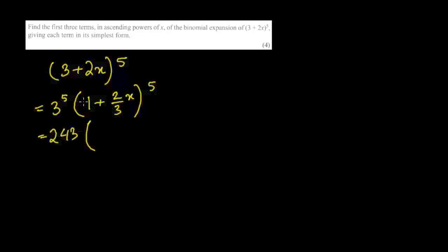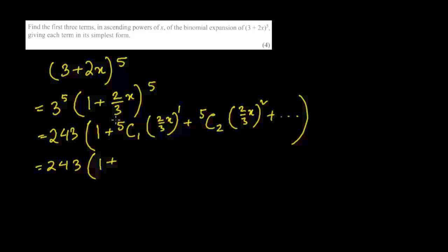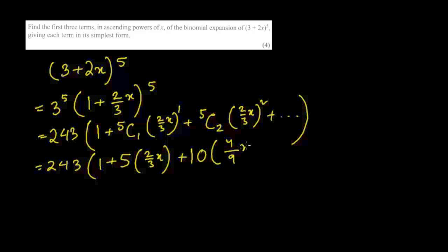Expanding using the binomial formula: 1 + 5C1·(2/3)x + 5C2·(2/3)^2·x^2 plus further terms. That gives us our first three terms. 5C1 is 5, and 5C2 is 10. So we have 5·(2/3)x plus 10·(4/9)x², since 2² = 4 and 3² = 9.